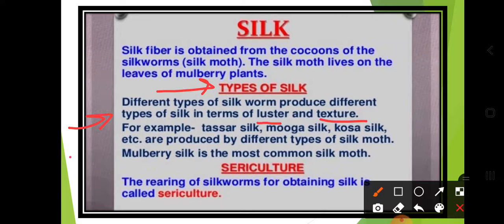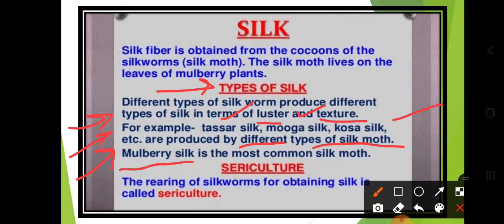Examples of silk types include tassar silk, mooga silk, and kosa silk. Just as human beings have variety in nature, silk moths also have variety. They produce different types of silk fibers. Mulberry silk is the most common type of silk moth.